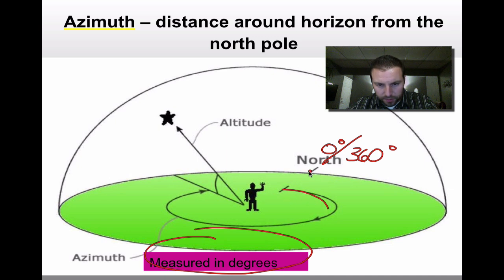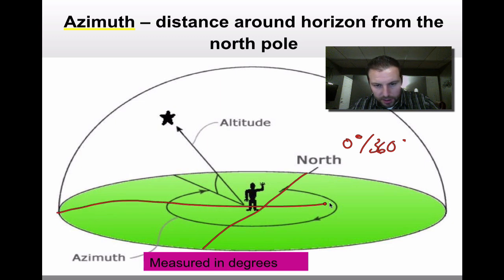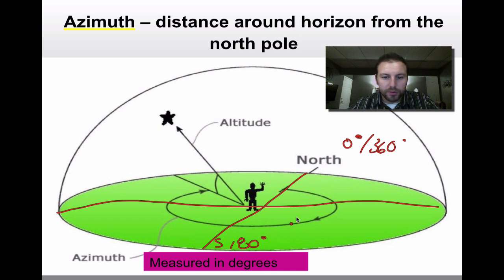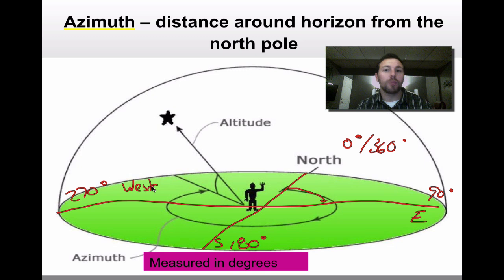We draw our coordinates something like this. From north, south is 180 degrees. From north to east is a 90-degree angle, so east is 90 degrees. Add another 90 from east and you get 180 — south. Add another 90 and you reach 270 degrees, which is west. So if anyone's gone boating and looked at the compass mounted on a boat or used a GPS, they give you your azimuth direction in degrees.